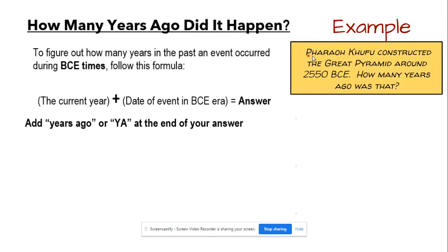Here's our example. Pharaoh Khufu constructed the Great Pyramid around 2550 BCE. How many years ago was that? I would take the current year, 2021, and I would add the event in the BCE era. Since this says BCE after it, it's telling me that I need to add. So I'm going to take 2550 BCE and add, and I get 4,571 years ago. The Great Pyramid at Giza was built 4,571 years ago. If you're being asked an event in a BCE era, you're adding it with the current year.